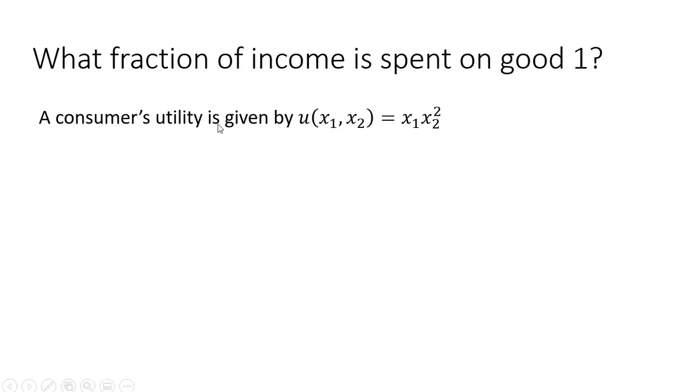A consumer's utility is given by u(x₁, x₂) = x₁x₂², which is a function of good 1 and good 2.